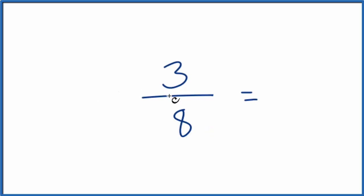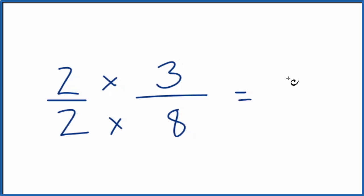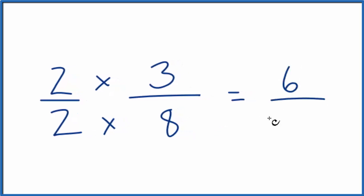If we multiply by one, that won't change the value. But two over two, that's the same thing as one. So we could multiply by two over two. Two times three is six. Two times eight is 16. That's an equivalent fraction for three eighths. These are equivalent.